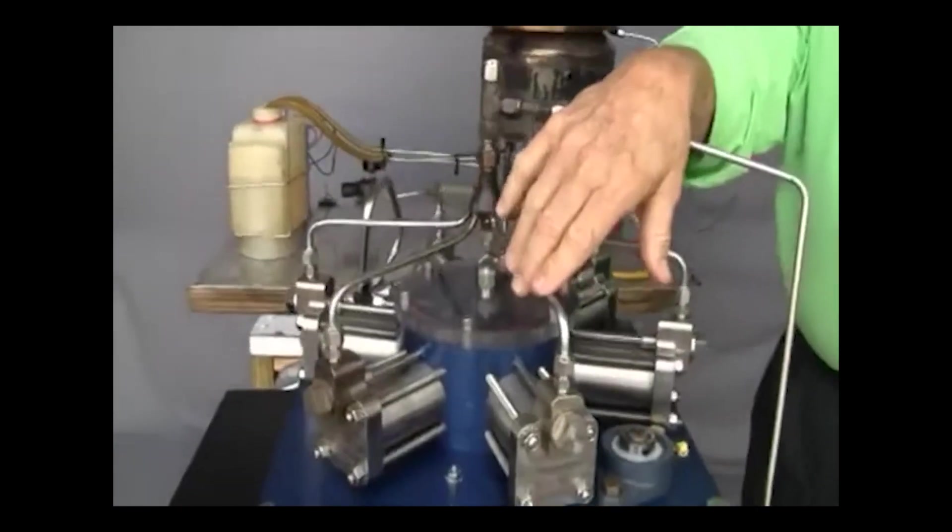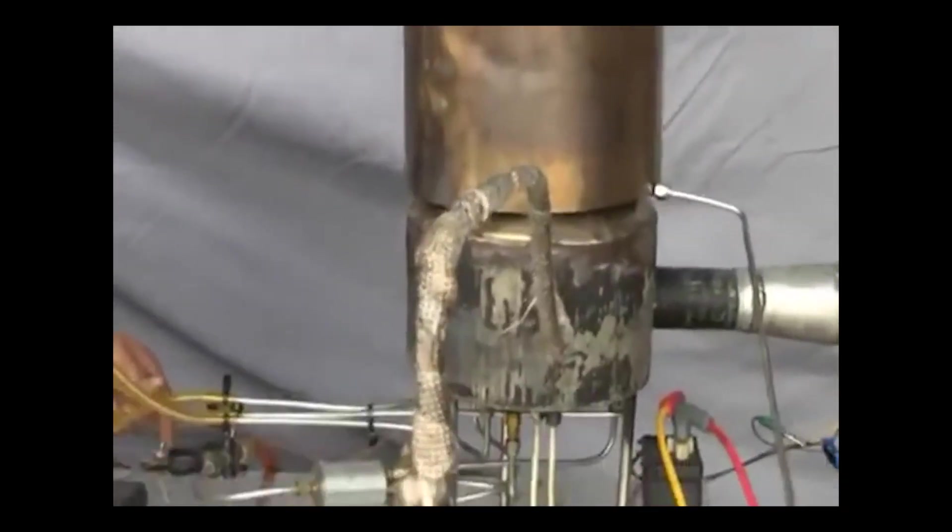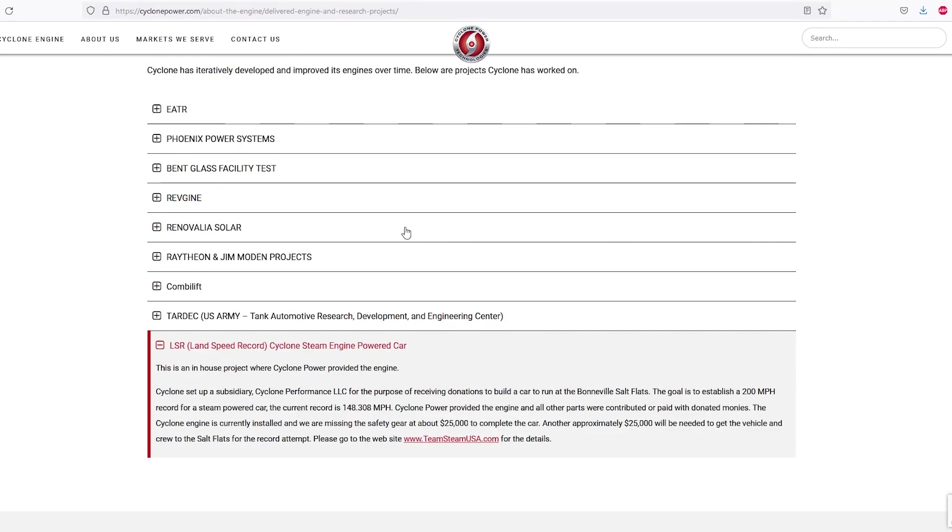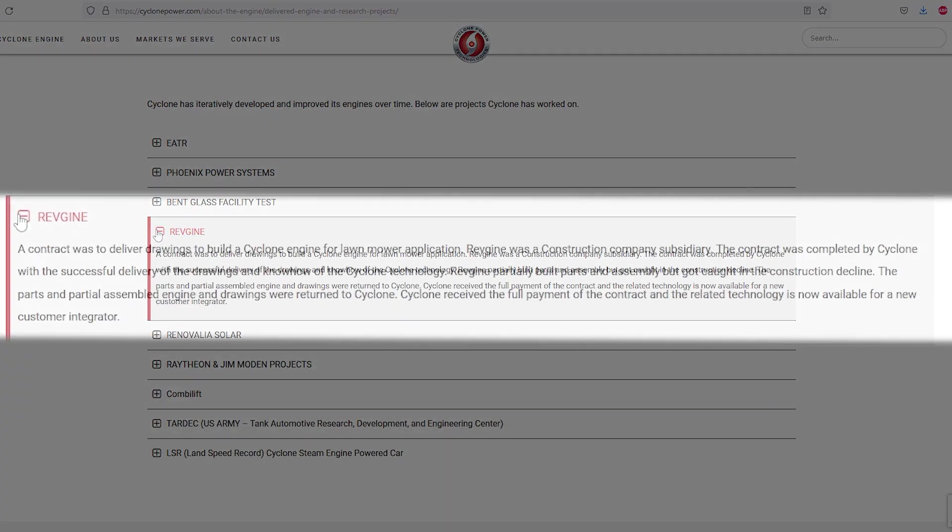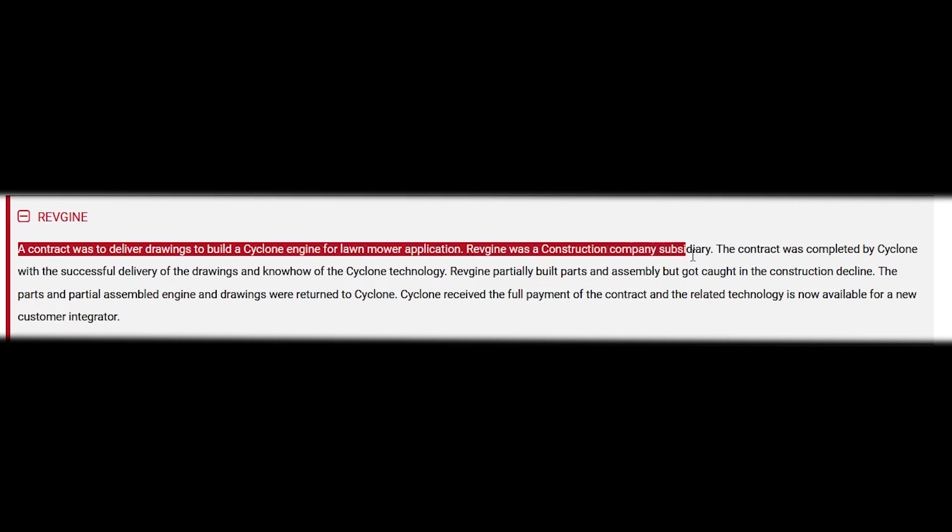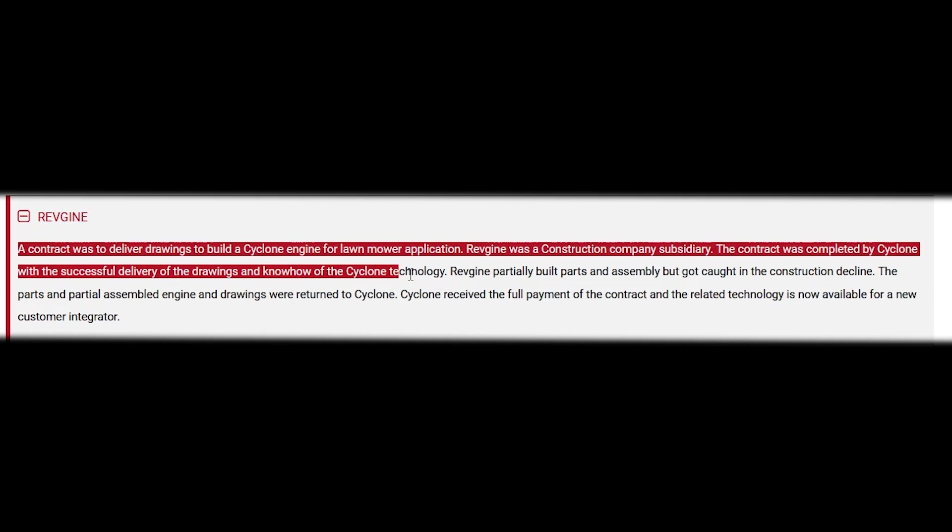But before we stop the video, they do a lot of other stuff as well. Maybe their other projects are stealing time and that's why they aren't going anywhere. One of those projects is the RevEngine. On Cyclone's own website they state: our contract was to deliver drawings to build a Cyclone engine for lawnmower applications. The contract was completed by Cyclone with the successful delivery of the drawings and know-how of the Cyclone technology.